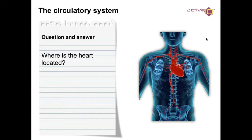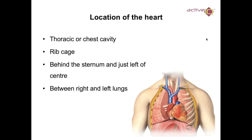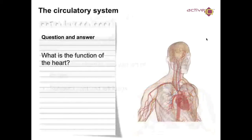Quick question: where is the heart located? So the location of the heart — you're looking at the thoracic or chest cavity, the rib cage. It should be behind the sternum and just left of the centre, between the right and left lungs, as you can see on the image.